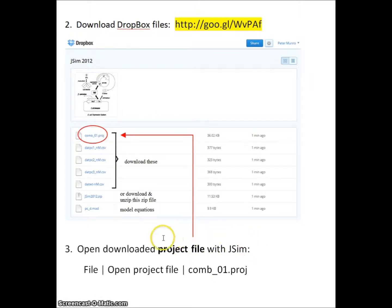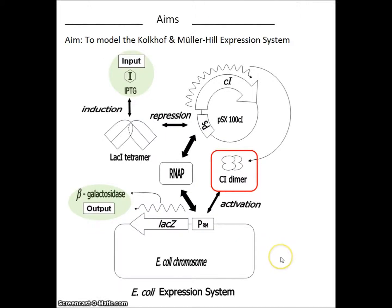Having downloaded the project files, we now want to open it with JSIM. Let us remind ourselves of the aim of our simulation. This is the expression system that we're simulating. In particular, we want to look at the effect of mutations in the C1 dimer and determine values for the parameters, parameters relevant to the C1 mutants.